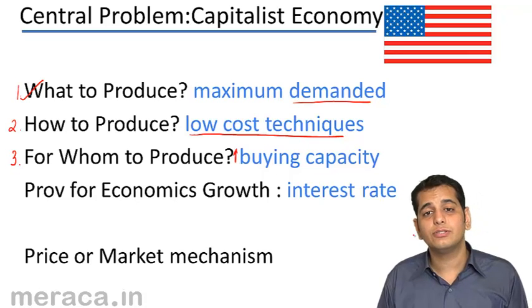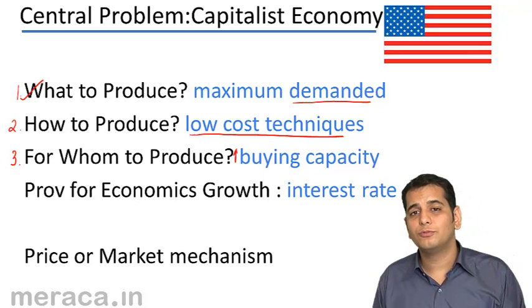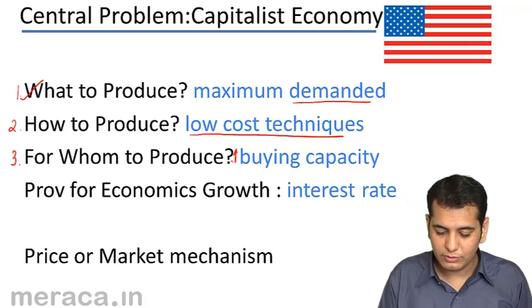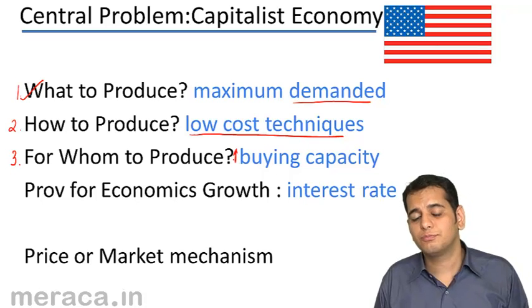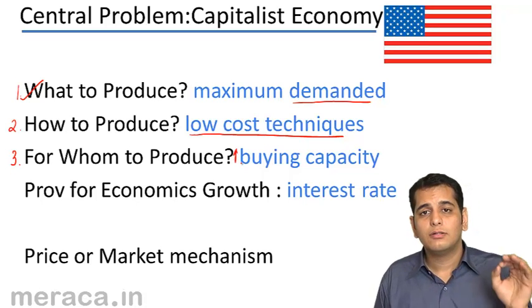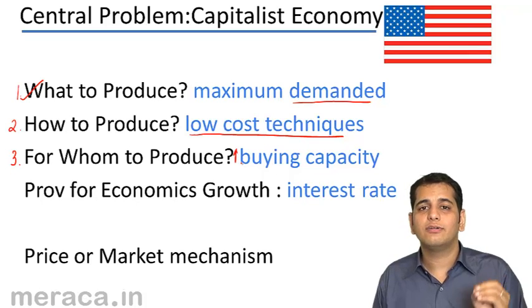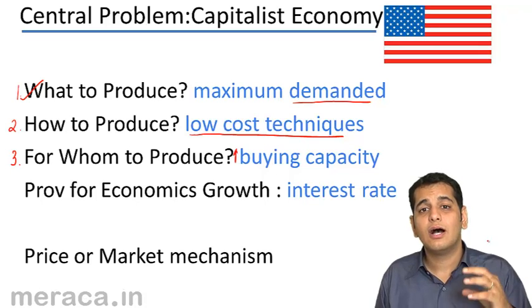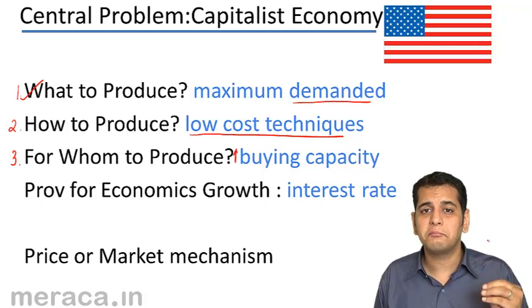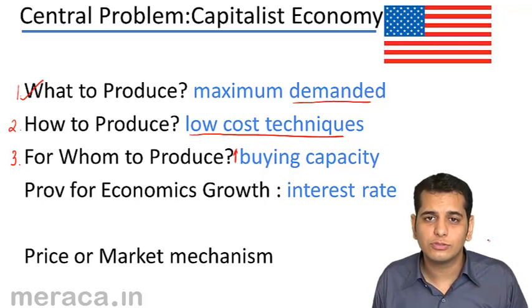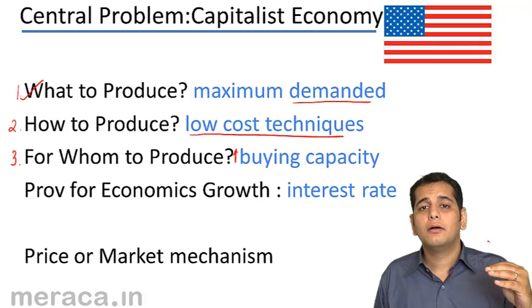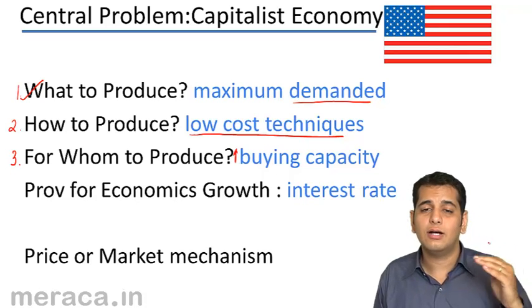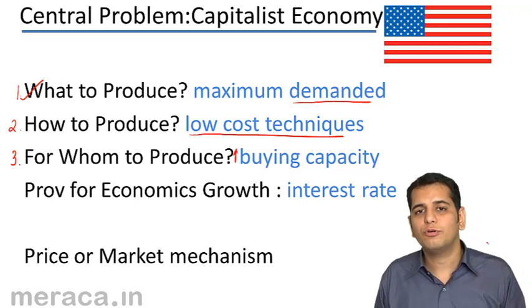The third problem is for whom to produce, and how does a capitalist economy answer this question? The solution is: produce for those people who have a higher buying capacity. People with a higher buying capacity do not mind paying more for goods, they do not mind expending more. So you can charge a higher price for your product and earn more profits.